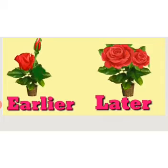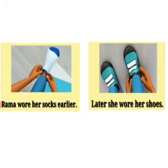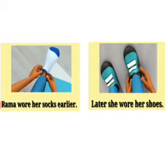Now let us see some more examples. Rama wore her socks earlier. Later, she wore her shoes. Rama is completing her task of wearing her shoes. You know very well when we have to wear shoes — first we have to wear our socks. So wearing socks is an earlier activity. Wearing the shoes is a later activity.